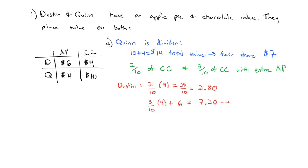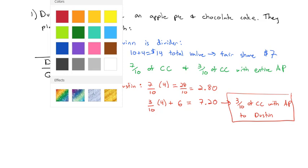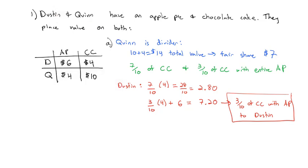Well, Dustin says, gee, that sounds better. So Dustin's going to take three-tenths of the chocolate cake with the entire apple pie. And meanwhile, Quinn gets the other piece. Quinn gets seven-tenths of the chocolate cake, which in Quinn's mind is perfectly a fair share, because that's how Quinn divided it. And now everybody's happy, because Quinn got a fair share. Dustin got more than what he viewed as a fair share. And everybody is content with this situation.